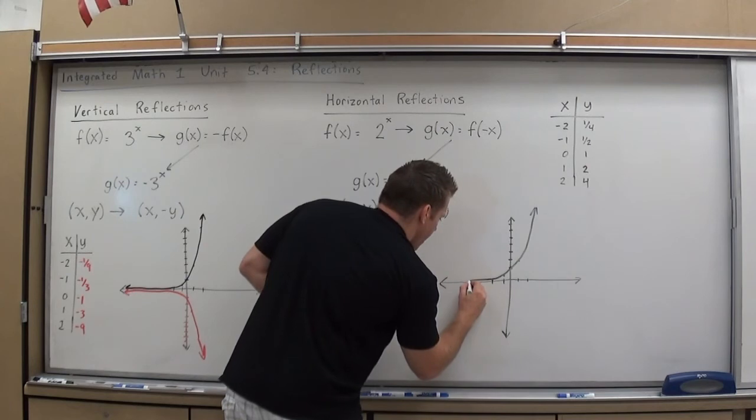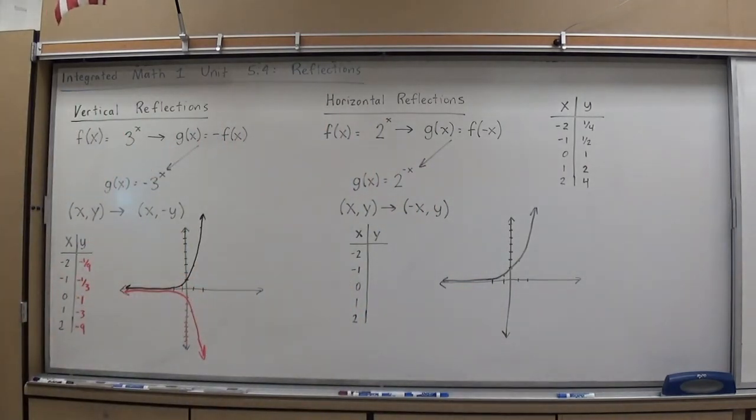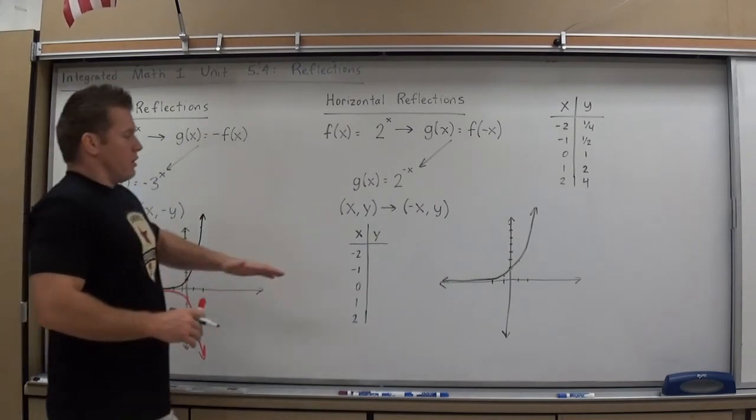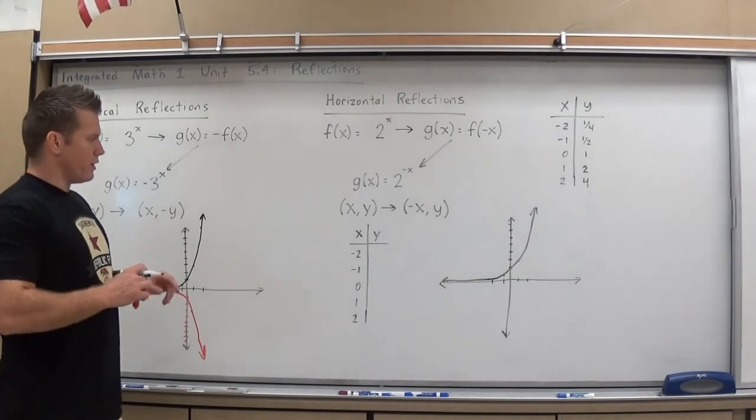And we'd have our asymptote at y equals 0. Very similar to the 3 to the x one, only a little less steep incline. And if we graph the other one and we plot the points,